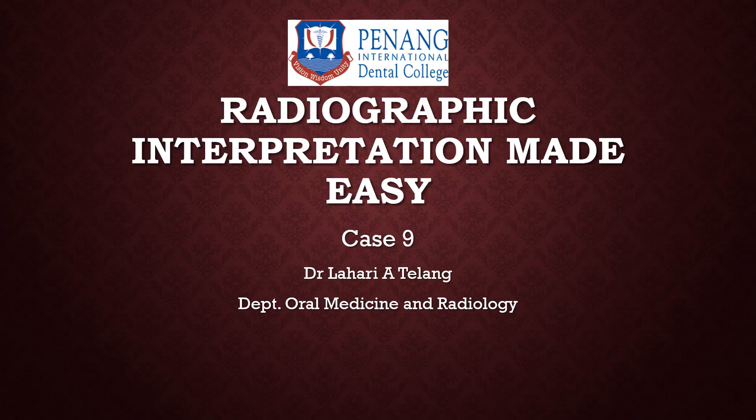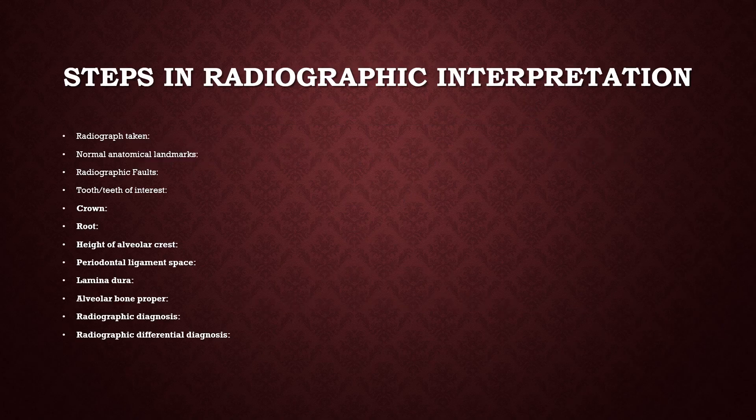Good day everyone. Let us look at Radiographic Interpretation Made Easy, case 9. I am Dr. Lahari Telang from the Department of Oral Medicine and Radiology. The steps in radiographic interpretation, like always, are: radiograph taken, normal anatomical landmarks, radiographic faults, tooth or teeth of interest, crown, root, height of alveolar crest, periodontal ligament space, lamina dura, alveolar bone proper, radiographic diagnosis, and finally radiographic differential diagnosis — all of which should help us arrive at the treatment plan required.